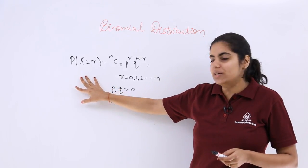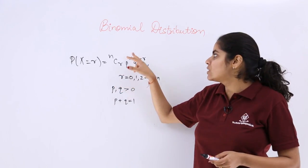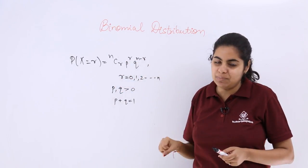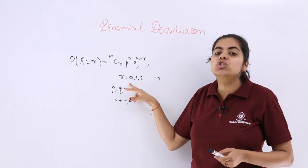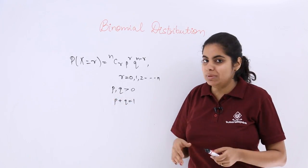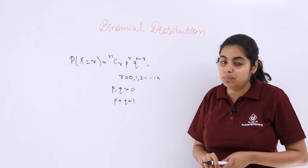we have the formula of binomial distribution as nCr p^r q^(n-r), where r belongs to whole numbers. p and q both should be greater than 0 and these add up to 1.